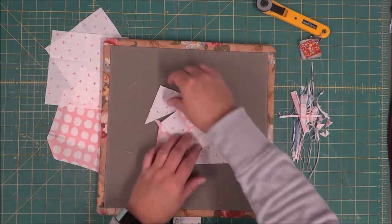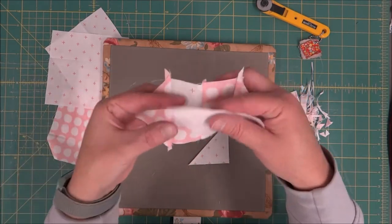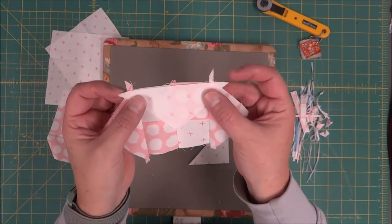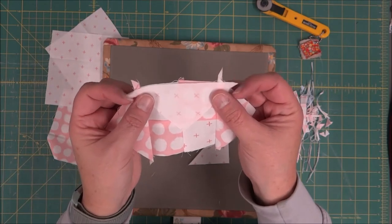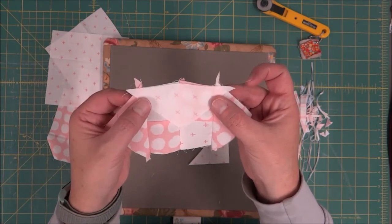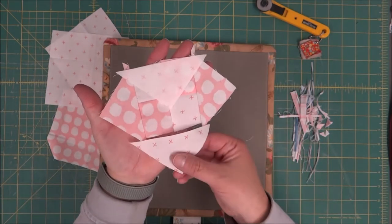The next step is to add our background triangles to this now. So we can pin it in place if we want, but we're going to line up the edge. We're also going to notice that these corners will overlap the block by just a little bit. We're going to sew this one down and then sew the last triangle on the opposite side.